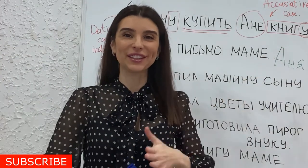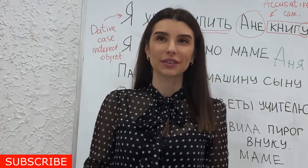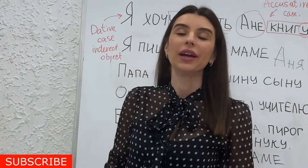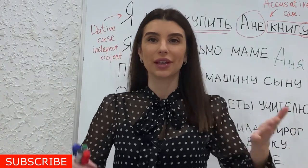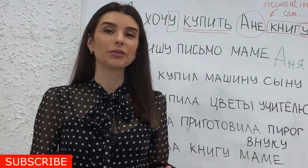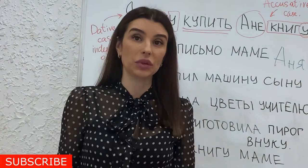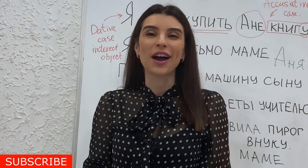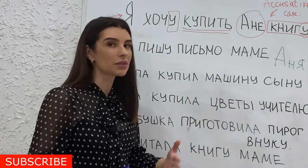Hello guys! Привет, друзья! Today we will speak about direct objects and indirect objects. An indirect object can be in the same sentence as a direct object, so both of them can appear together. I want to show you some examples.